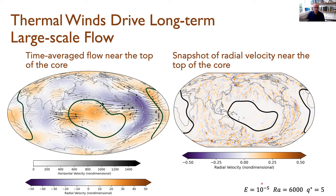This is one of the simulations I'll focus on throughout this talk — we've done a few different simulations, and the details vary, but I'll focus on the large-scale similarities. That general structure of westward flow across the Atlantic, skirting up around the Pacific and then coming back down, is something we see in all of the simulations in the time average. This is reminiscent of the eccentric gyre seen in Luis Silva's core flow inversion, and as many others have seen in core flow inversions — this sort of eccentric gyre flow is often seen in those observational studies.